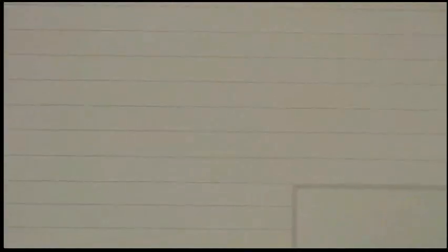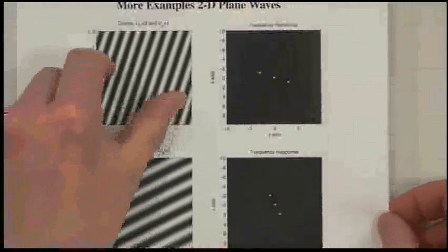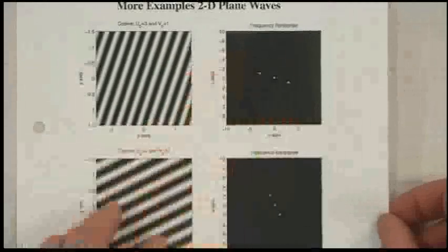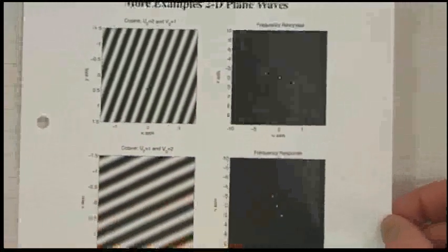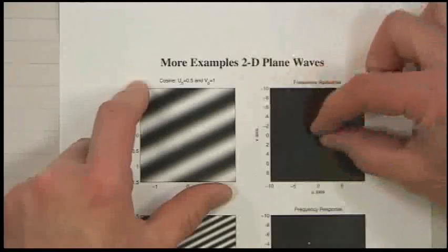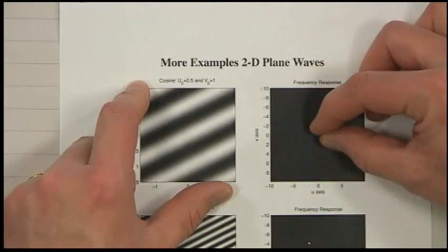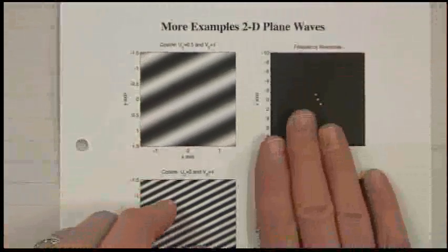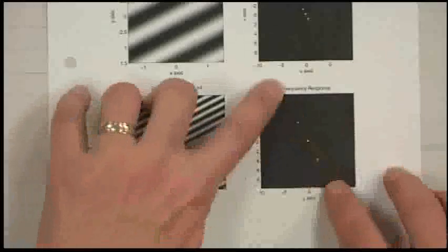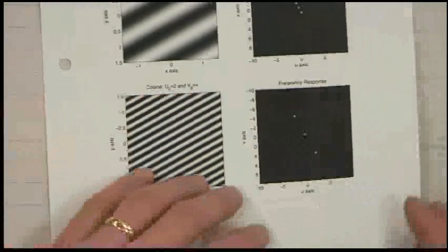Here are some different examples. If I rotate this thing, these rotate correspondingly. If I stretch this out in space, I compress it in frequency. If I compress it in space, I stretch it out in frequency — they go in opposite directions, as I discussed last time. That gives you some basic intuition.